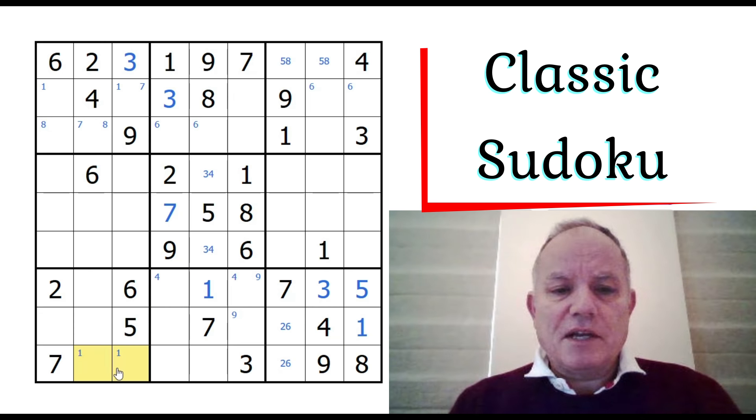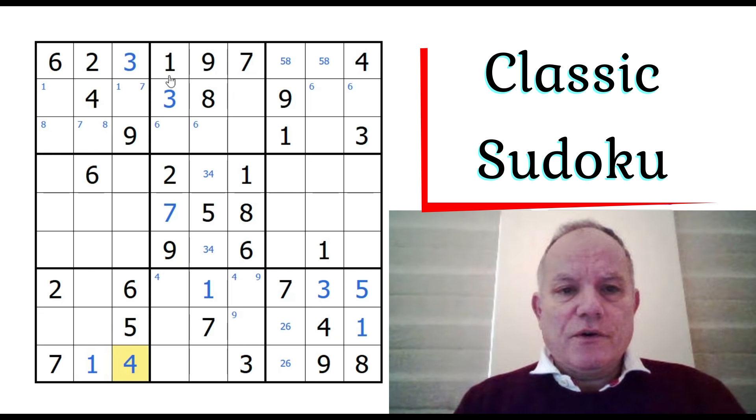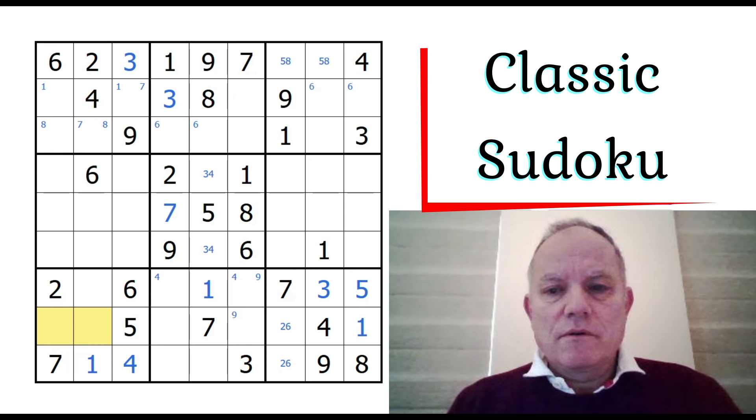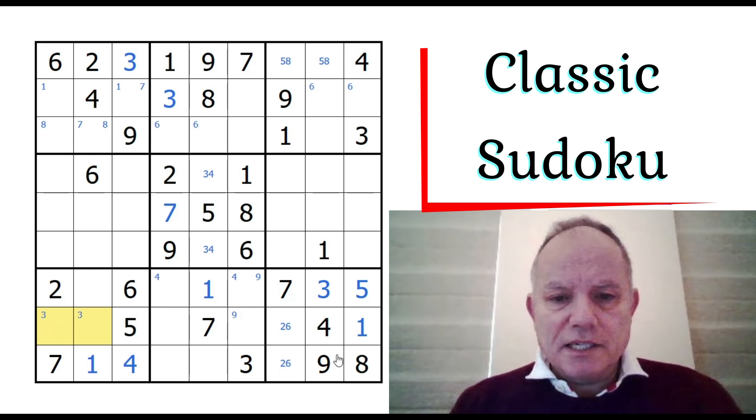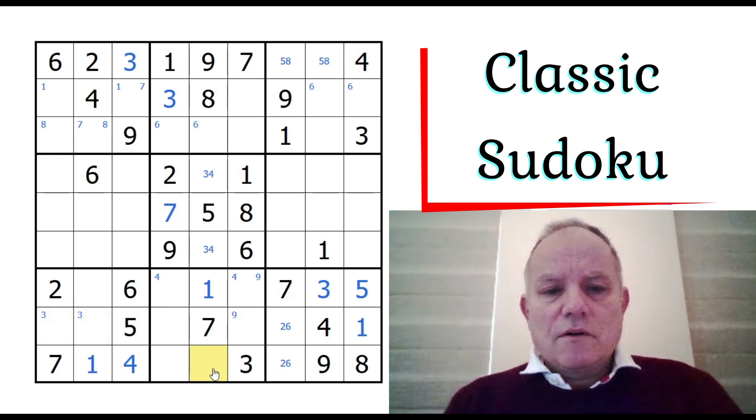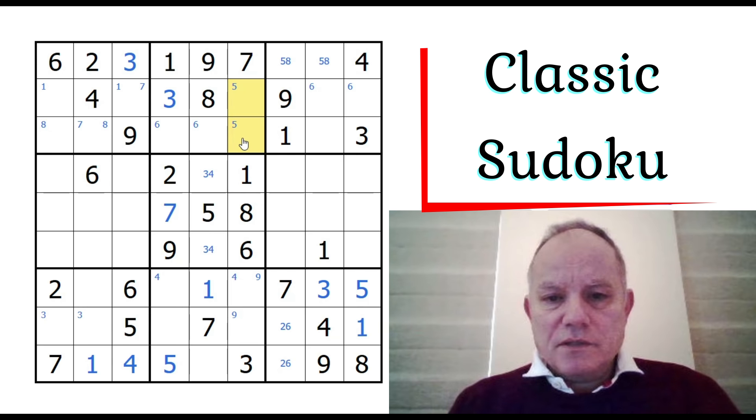This can't be a four because of that four, so four must be in one of these cells at the top here. Now four must be in one of those cells. That four means there's a four down here, so this is resolved by the same four up here. I'm not sure whether this puzzle is going to turn out to be all that difficult, but let's see.